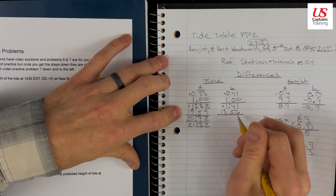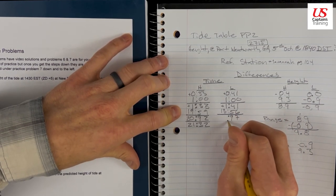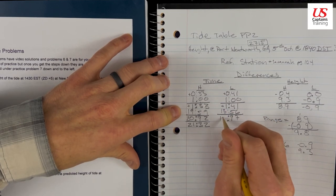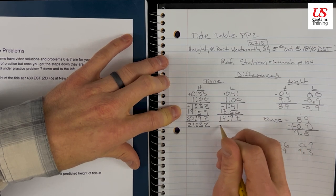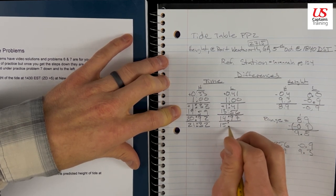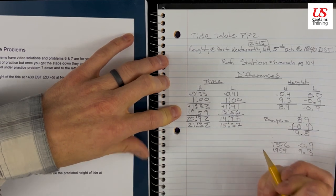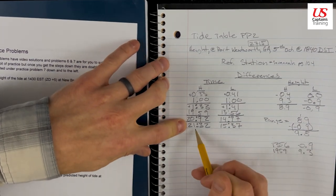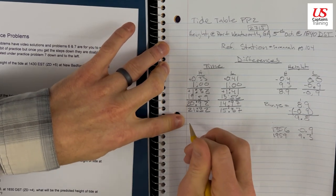And now 1 plus 6 is 7. 4 plus 5 is 9. 1 and 13 is 14. We can't have 97 minutes. So we're going to take 60 out at an hour. 15:37. So our high was at 21:32. Our low is at 15:37.